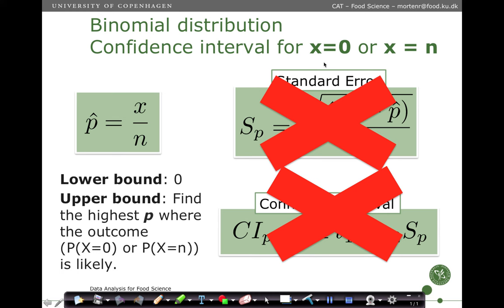So if we take the case where x is 0, the confidence band for p would start at 0, because we observe 0 out of n, so the lowest possible value of p is probably 0. For the upper bound, we ask: can we find the highest p where the outcome — the probability of x equals 0, or in the other case where x equals n — is still likely?